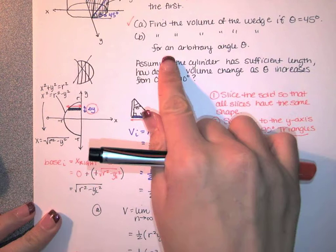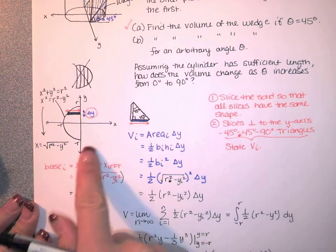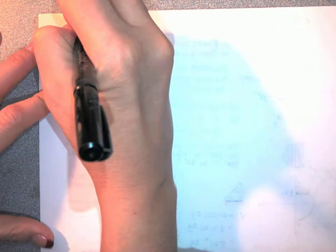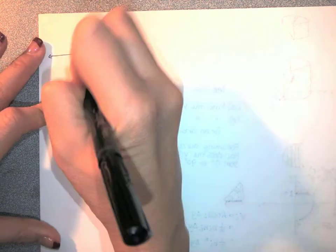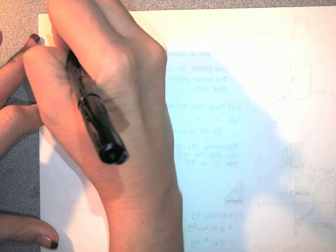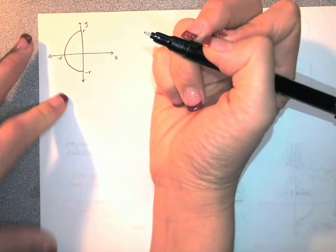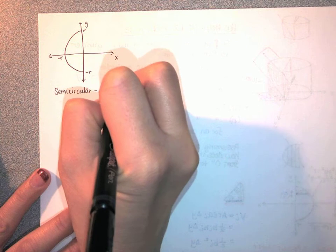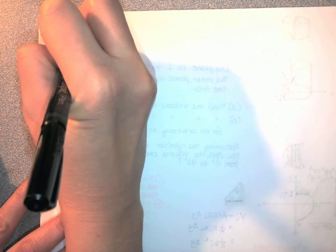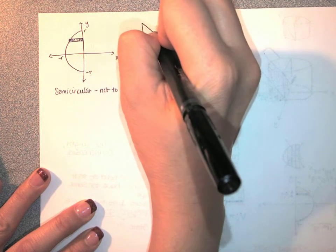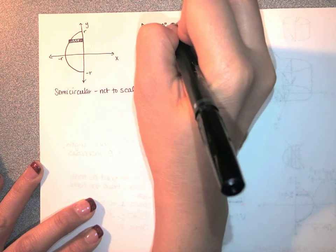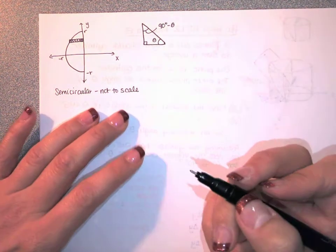Now let's look at part B. We're going to do exactly the same thing, but for an arbitrary angle theta. This is still our base and our triangles are still going to look like this, but instead of a 45 degree angle, we're just going to have theta there. We're still slicing this way and we still have a triangle sitting on top. That angle is theta, and the other angle has to be 90 minus theta, so that 90 minus theta plus theta gives us 90. We still have a right triangle.